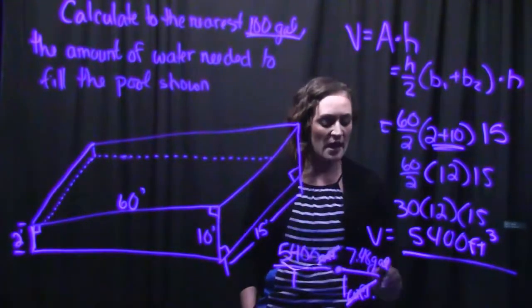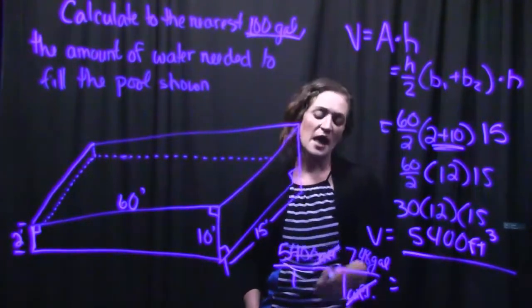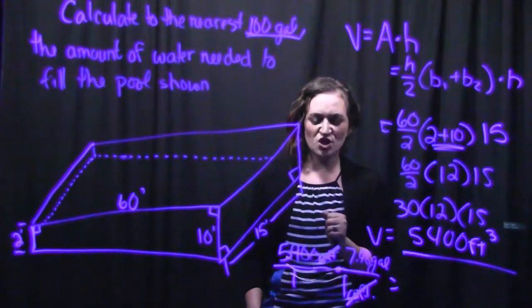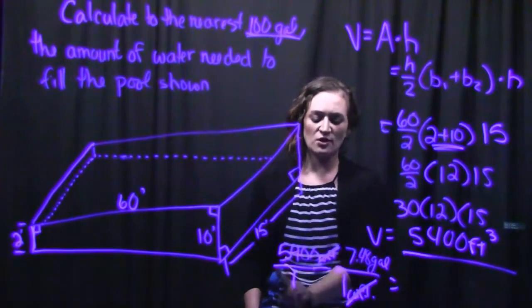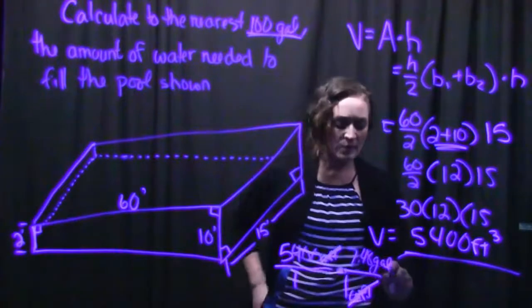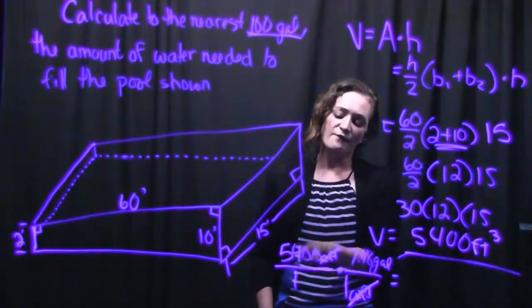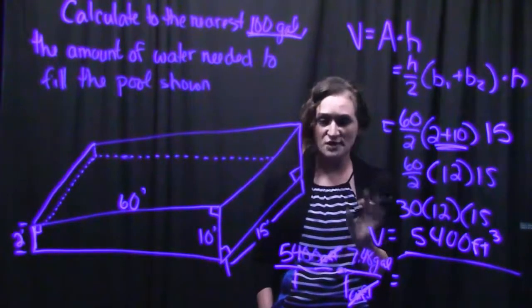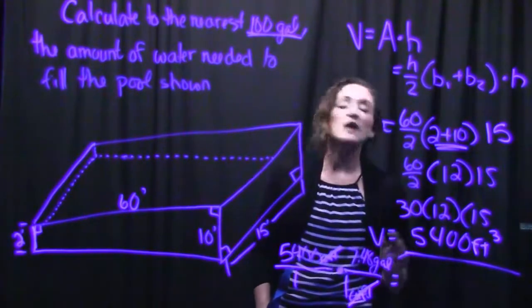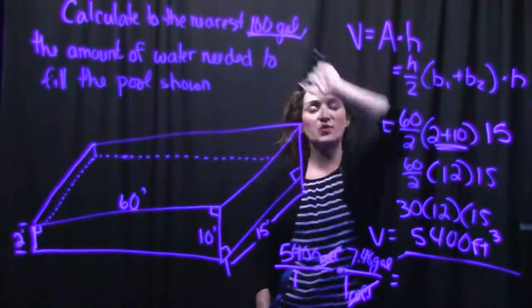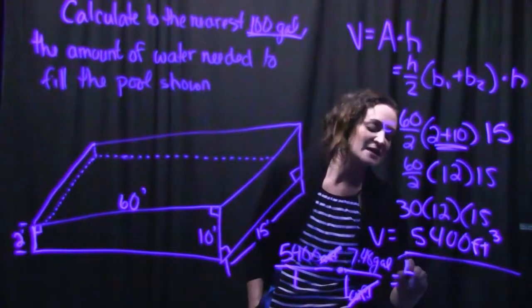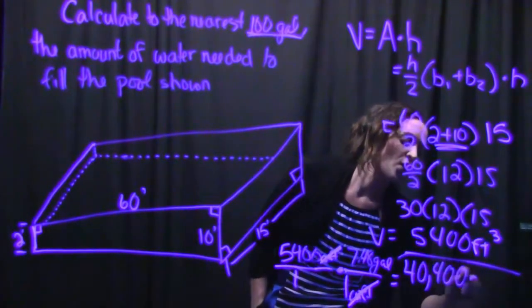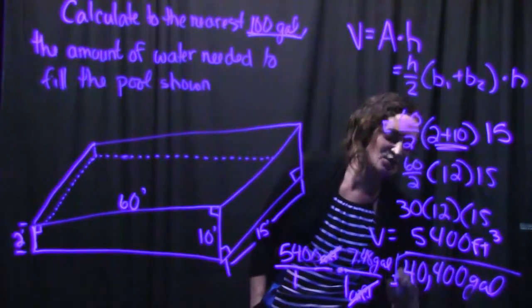Otherwise, we just need to go ahead and multiply out this fraction. And remember, multiplying fractions is straight across. Numerator times numerator, denominator times denominator. So after we multiply this out, 5,400 times the 7.48 is going to give us 40,392. And if we round that to the nearest hundredth, remember that's what our question says, it's going to give us 40,400 gallons total...